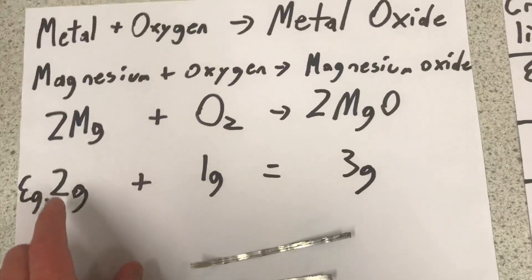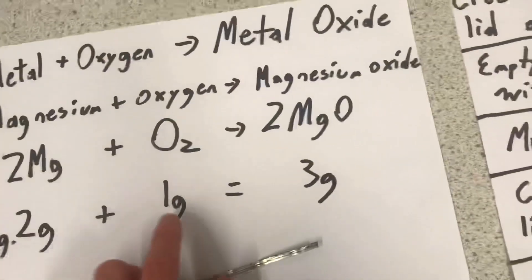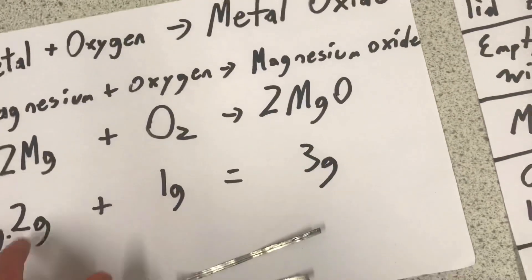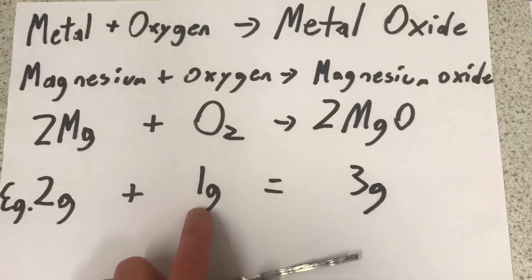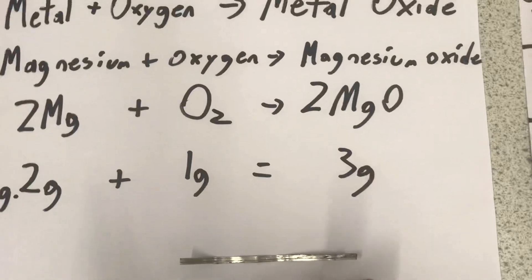So, if we add 2 grams of magnesium to 1 gram of oxygen, that is our reactant, the law of conservation of mass says we should make 3 grams of magnesium oxide.